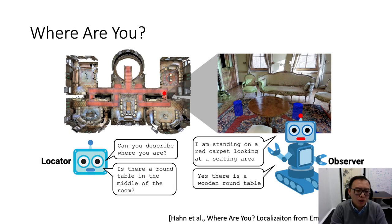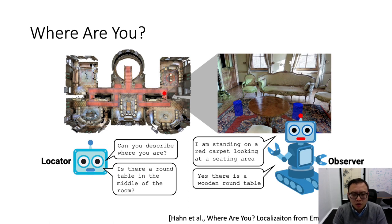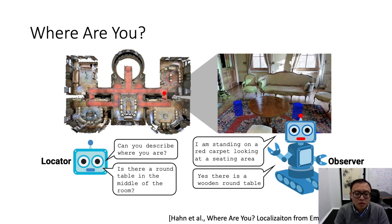Another dataset, WHERE ARE YOU (WAY), contains 6,000 dialogues in which two humans — an observer and a locator — complete a cooperative localization task. The observer is spawned at random in a 3D environment and can navigate from first-person views while answering questions from the locator. The locator must localize the observer in a map by asking questions and giving instructions. Based on this dataset, they define three tasks: localization from embodied dialogue, embodied visual dialogue (modeling the observer), and cooperative localization (modeling both agents).